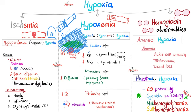Hemoglobin abnormalities are divided into anemic hypoxia and histotoxic hypoxia. Anemic hypoxia: I have anemia, regardless of the cause — could be sickle cell disease, thalassemia, blood loss, etc. Don't forget that blood loss leads to both anemic hypoxia and ischemic hypoxia. Histotoxic hypoxia: what's poisoning your hemoglobin? Carbon monoxide poisoning, methemoglobinemia, and sulfhemoglobinemia.